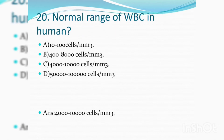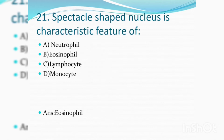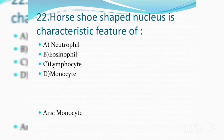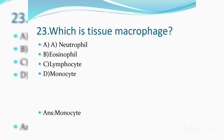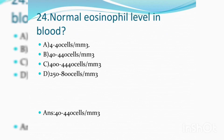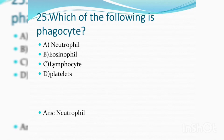The normal range of WBC in humans is 4,000 to 10,000 cells per millimetre cube. Spectacle-shaped nucleus is a characteristic feature of eosinophils. Horse-shoe shaped nucleus is a characteristic feature of monocyte, which is the tissue macrophage. The normal eosinophil level in blood is 40 to 440 cells per millimetre cube.